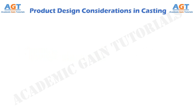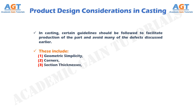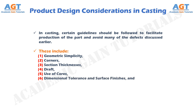Product Design Considerations in Casting. In casting, certain guidelines should be followed to facilitate production of the part and avoid many of the defects discussed earlier. These include Geometric Simplicity, Corners, Section Thicknesses, Draft, Use of Cores, Dimensional Tolerance and Surface Finishes, and Machining Allowances.